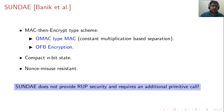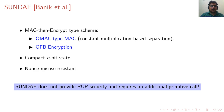But there is a catch: Sunday does not provide RUP security. You may have already seen an attack on Sunday in a paper presented at FSE 2020. Another disadvantage is that Sunday requires an additional primitive call to prepare a state depending upon the emptiness of the data — whether the data is empty or not, Sunday requires an additional block cipher call to differentiate.